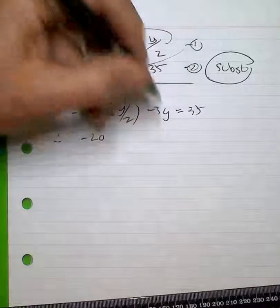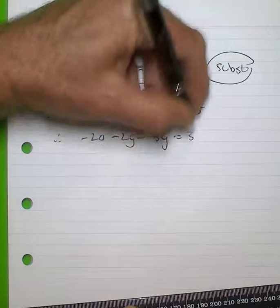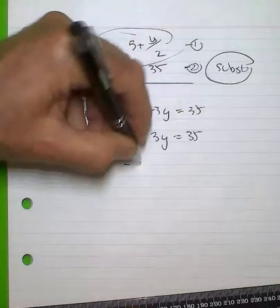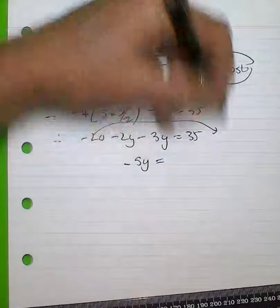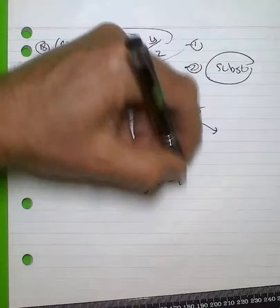So -20 - 2y - 3y = 35. Transposing, -5y = 55, and y = -11.